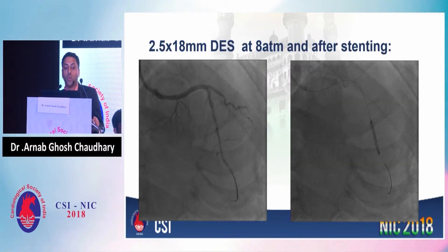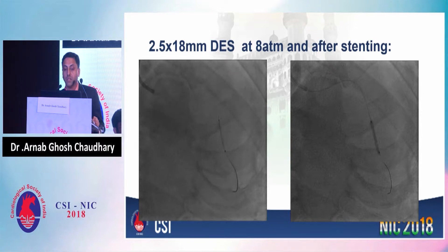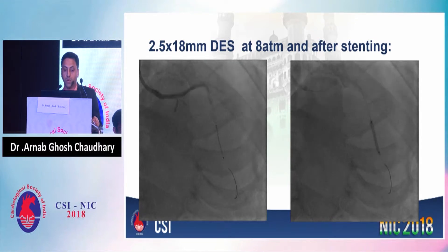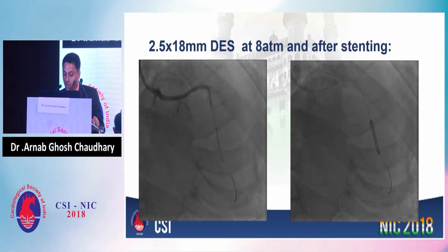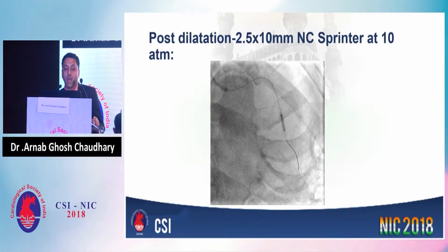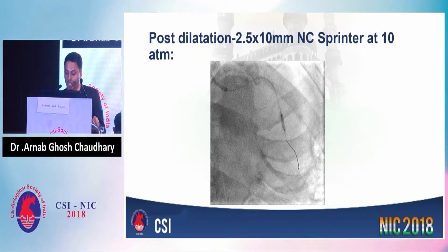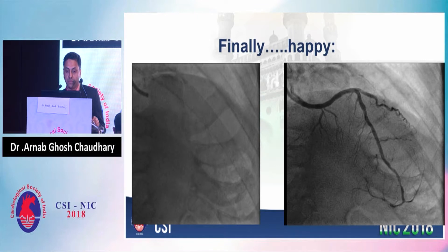Finally, a 2.5 × 18 mm drug-eluting stent was deployed at 8 atm of pressure in the long LAD. After that, post-dilatation was done using a 2.5 × 10 mm non-compliant balloon at 10 atm of pressure.